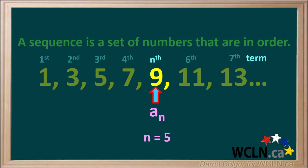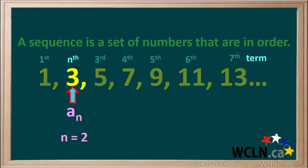For example, if n is equal to 5, the fifth term is called the nth term, designated by the letter a with the subscript n. In this case, when n is equal to 5, the nth term is the number 9. And if n is equal to 2, the second term is the nth term, designated by aₙ — so if n equals 2, the nth term in this sequence is the number 3. We can make aₙ stand for any term we want. That's why aₙ is called the general term.